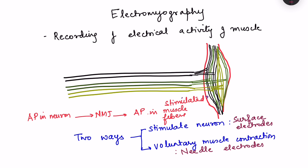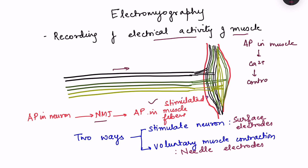Electromyography is the recording of electrical activity of muscle. When an action potential travels via a neuron supplying the muscle fibers, that action potential via the neuromuscular junction reaches the muscle fibers, leading to action potential in the muscle fibers. Only after the action potential is there a release of calcium and then contraction of the muscle. In electromyography we are interested in this electrical activity — the action potential in the muscle fibers.